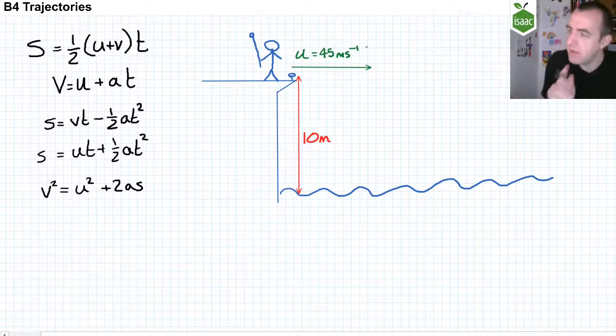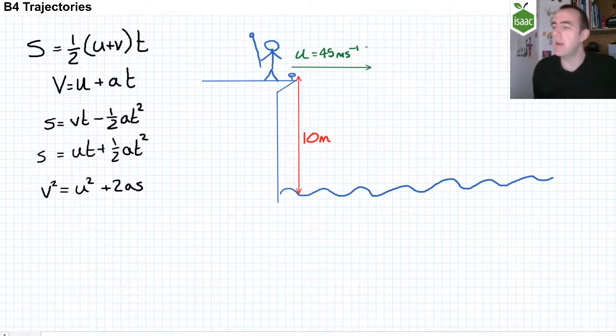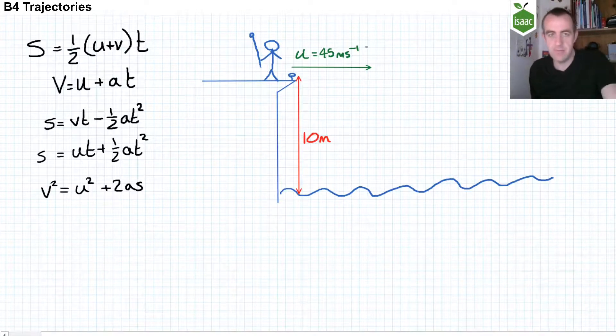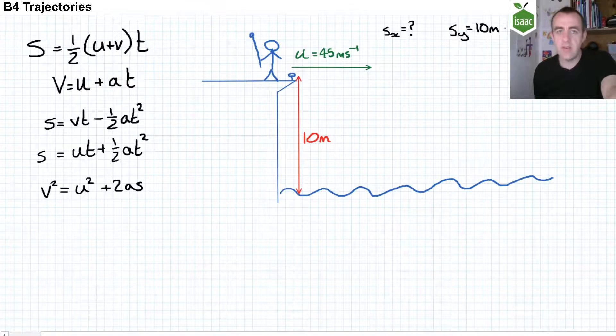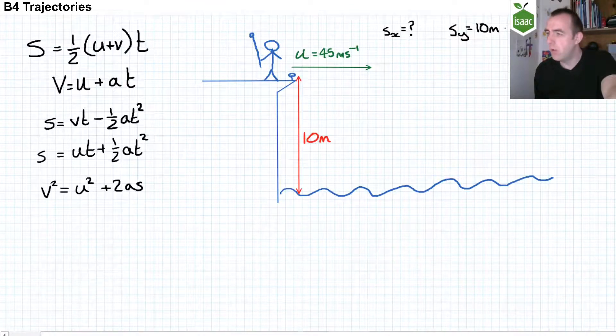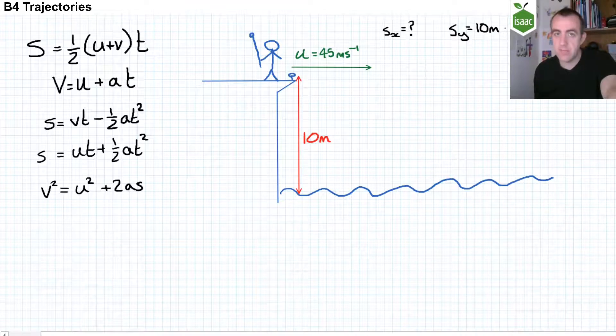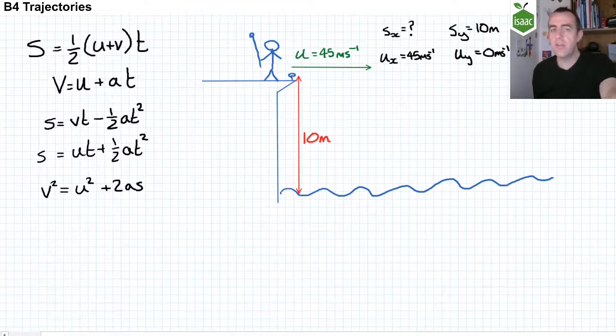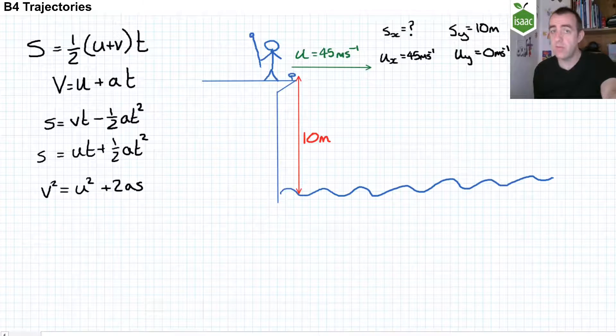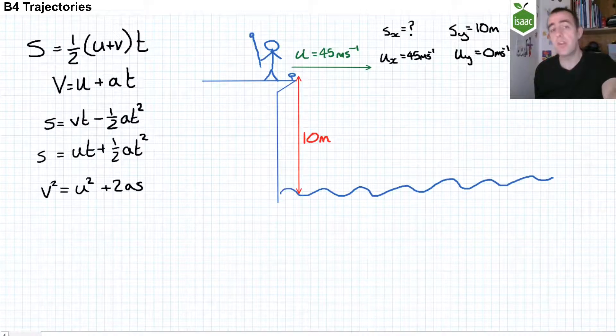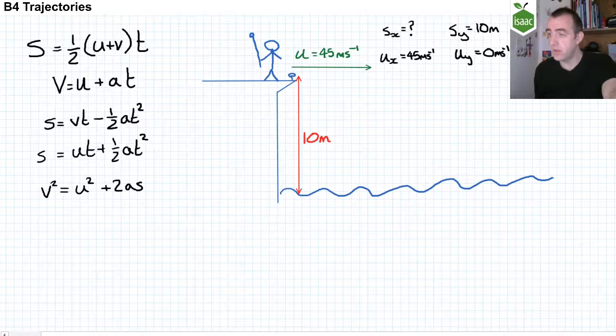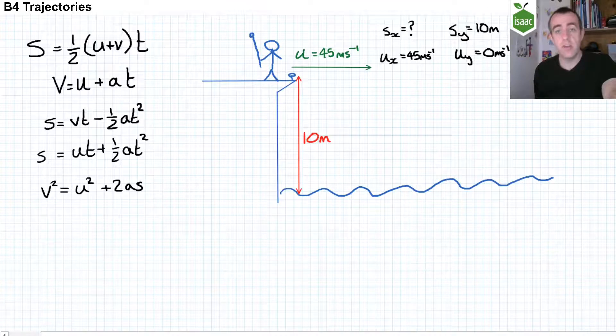But we have to be careful to handle our x and our y directions separately. Our displacement in the x-direction, that's what we want to find, the range of the ball. The displacement in the y-direction of this ball will be 10 meters. The initial velocity in the x-direction is 45 meters per second because it's being projected horizontally. The initial velocity in the vertical direction is 0 meters per second.